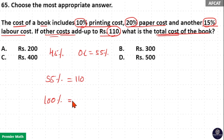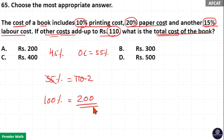100 percentage is equal to: 55 goes two times in 110, so 1 percentage is 2, meaning 100 percentage is 200 rupees. So option A is your answer.